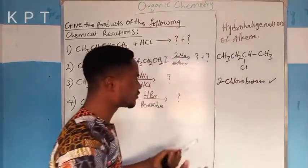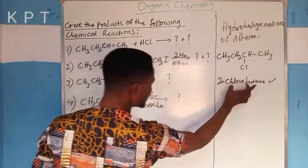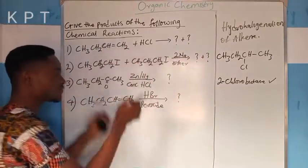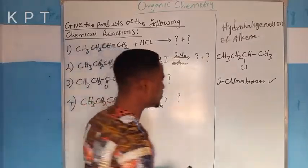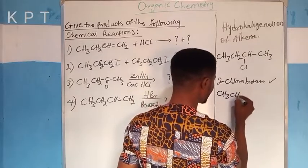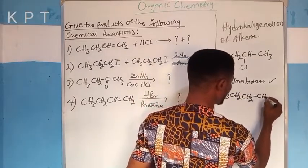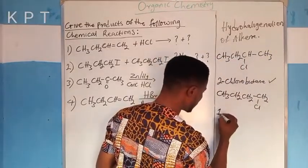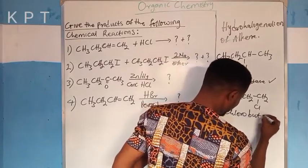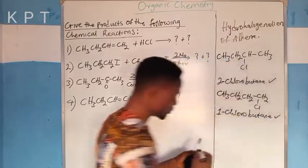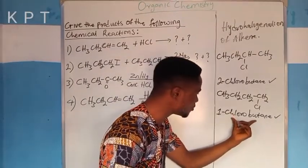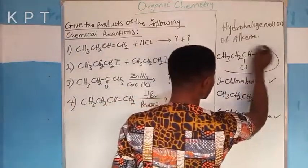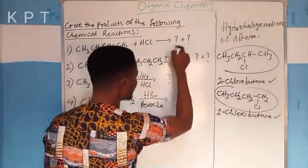2-chlorobutane is the product when Markovnikov's rule is obeyed. Now the second answer: when hydrogen enters the other carbon and chlorine enters the other, Markovnikov's rule is no longer obeyed. The answer to that problem is going to be CH3-CH2-CH2-CH2Cl. So the answer to this problem is 1-chlorobutane. This 1-chlorobutane is the product when Markovnikov's rule is not obeyed, while 2-chlorobutane is the product when Markovnikov's rule is obeyed.